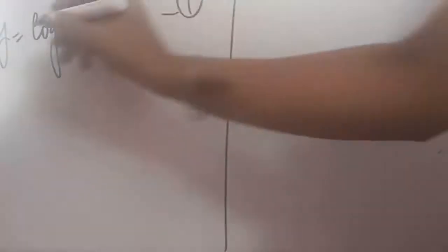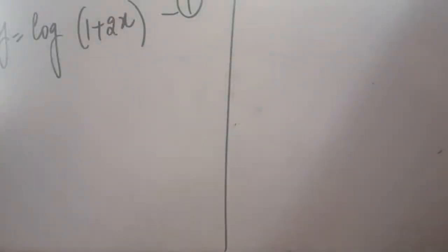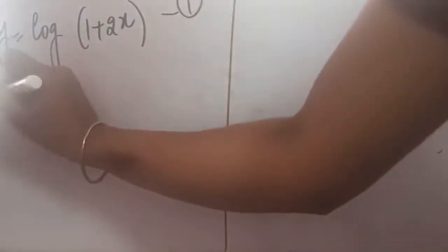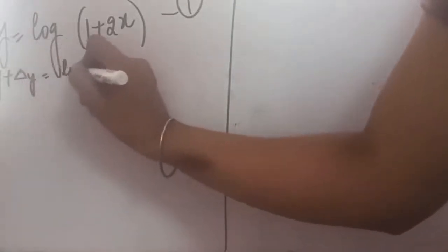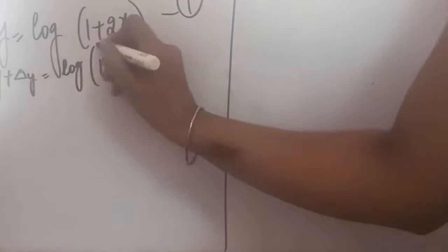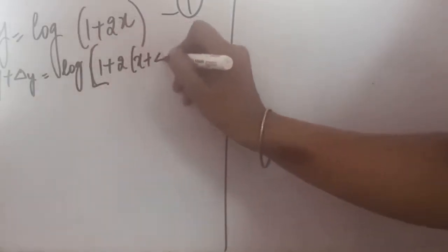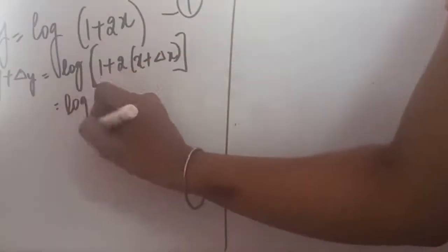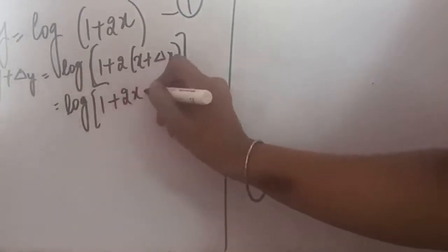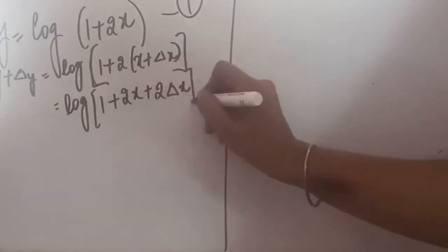This is another question of log which can be solved with the help of first principle. Let us go step by step. The first step was putting the function equal to y. This will become our first equation. Then second comes: we have to add the increments. So y plus delta y equals log(1 + 2(x + delta x)). When we open this bracket, it will be log(1 + 2x + 2 delta x), and this becomes our second equation.